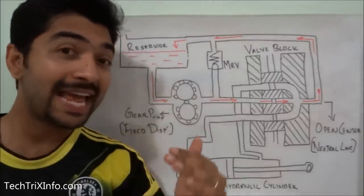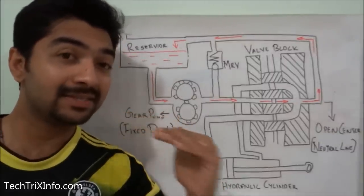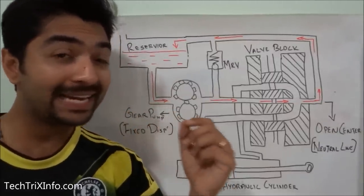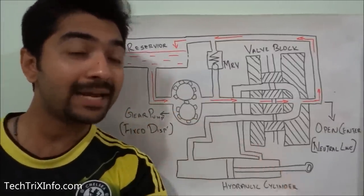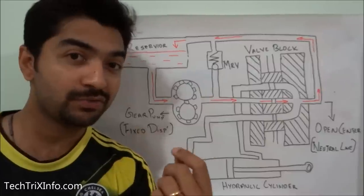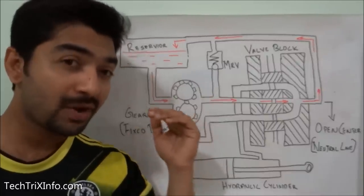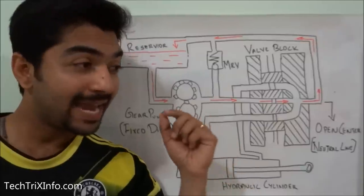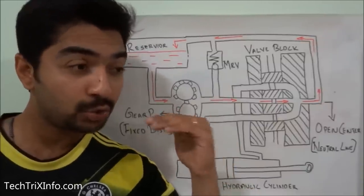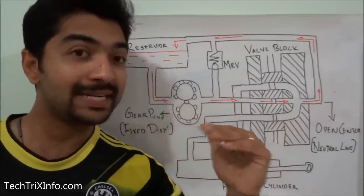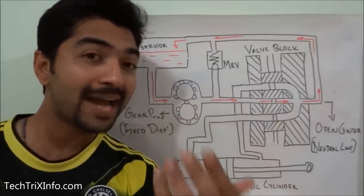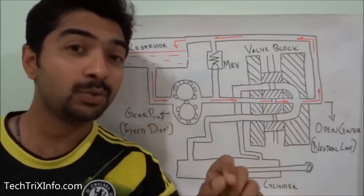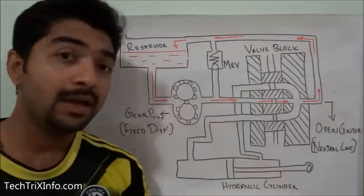This open center is called the neutral line, and this circuit can route the flow directly back towards the reservoir. That means the flow coming from the hydraulic pump can be channeled through this open center directly back towards the reservoir without being connected towards the pressure line.